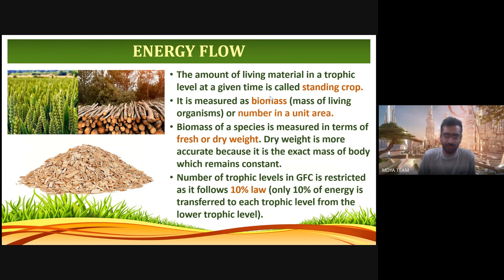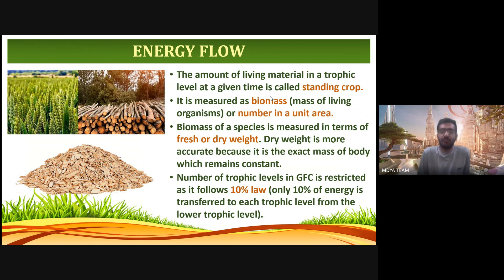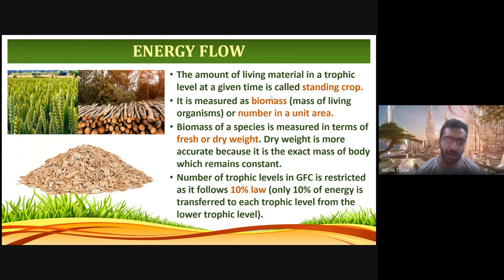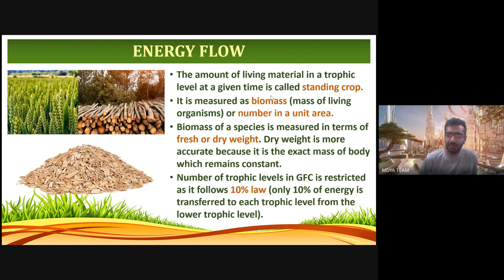It is called biomass because it refers to the mass of the living organism. Biomass of a species is measured in terms of fresh or dry weight. Dry weight is more accurate because it is the exact constant mass of the body. When an organism has water inside it, the actual weight can differ significantly. That is why dry weight — which has no moisture or water content — is taken as the accurate measurement for biomass of a species.